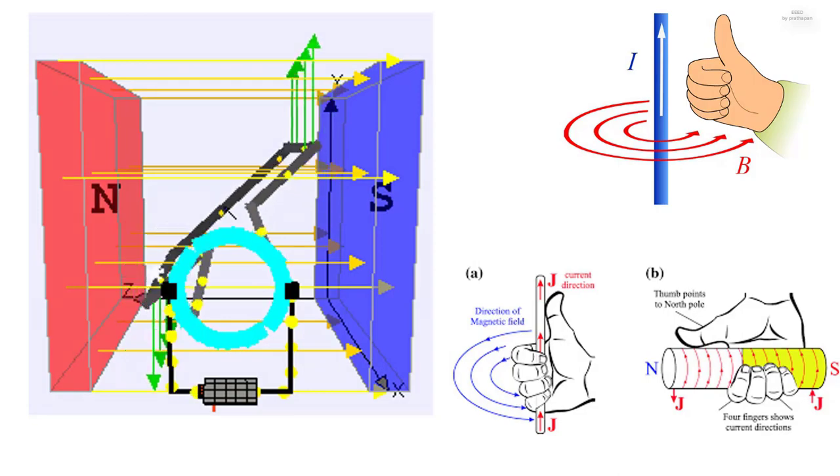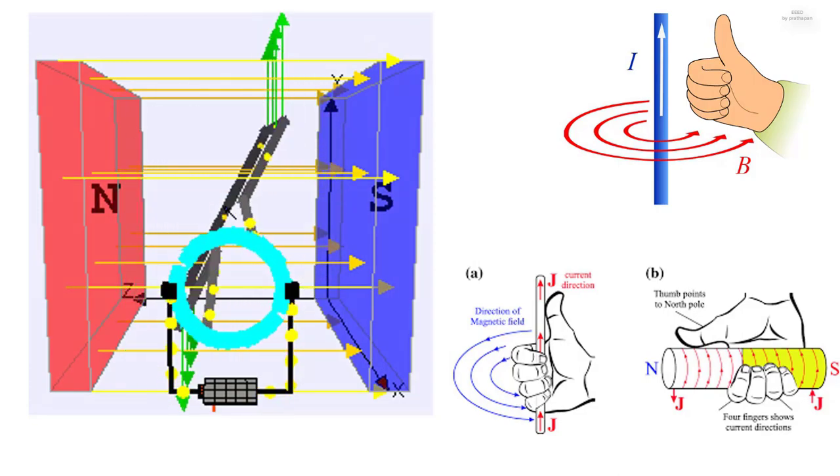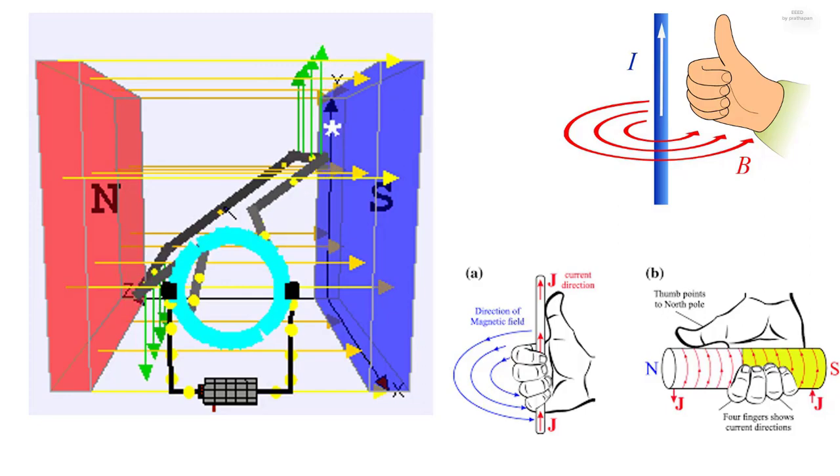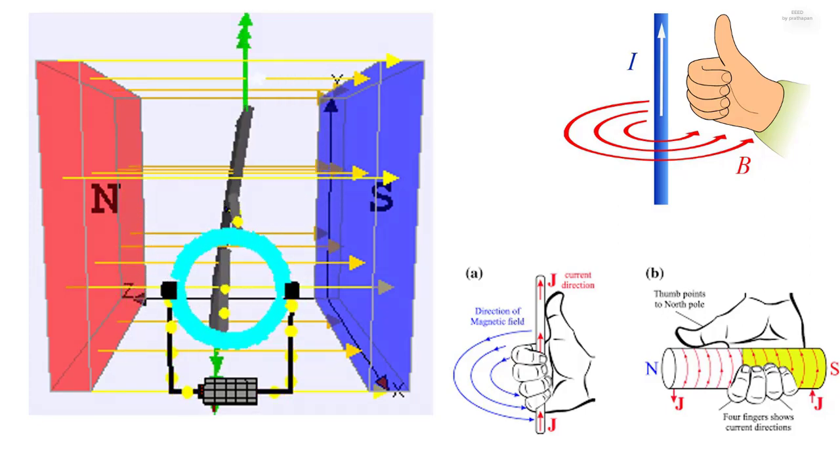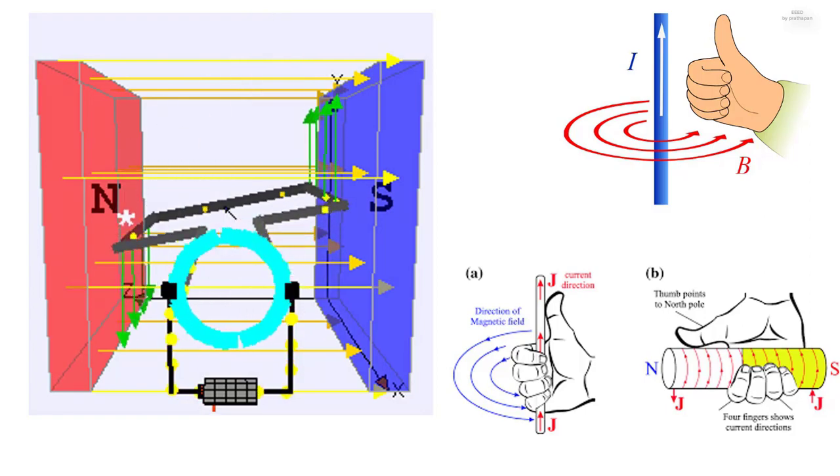In this case (motors), if the conductor is carrying conventional current upwards and the external magnetic field is moving away from the viewer, the physical force will work to push the conductor to the left. This is the reason for torque in an electric motor.